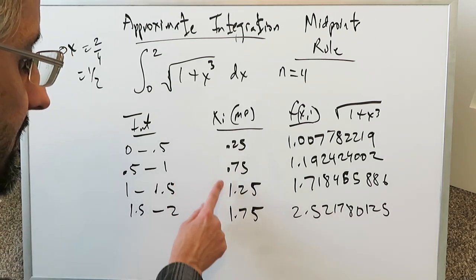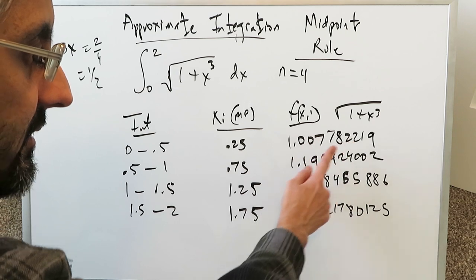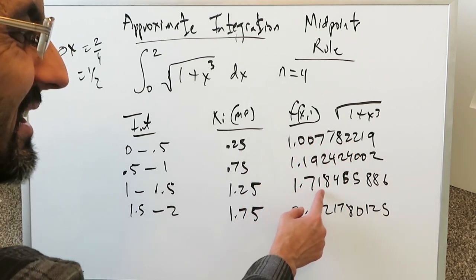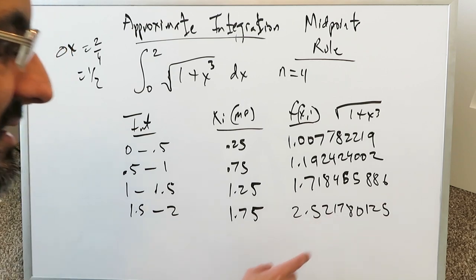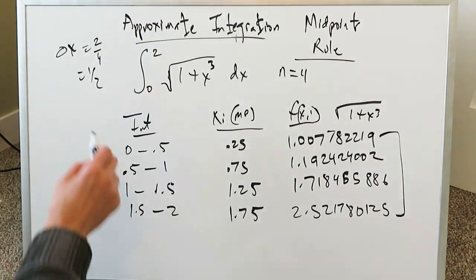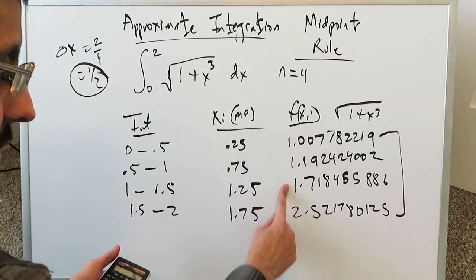So I've determined these values. I took each of these values and I put them right here in place of x and I solved that and I got the numbers over here 1.007, 1.1924, 1.7184, 2.5217. Now what I have to do is basically add all of these and then I'll multiply them at the end with this and that'll give you the approximate value here with regards to this definite integral the area under the curve and we can solve it out and write it out for you. I'll give you the total sum over here before I multiply it with that.